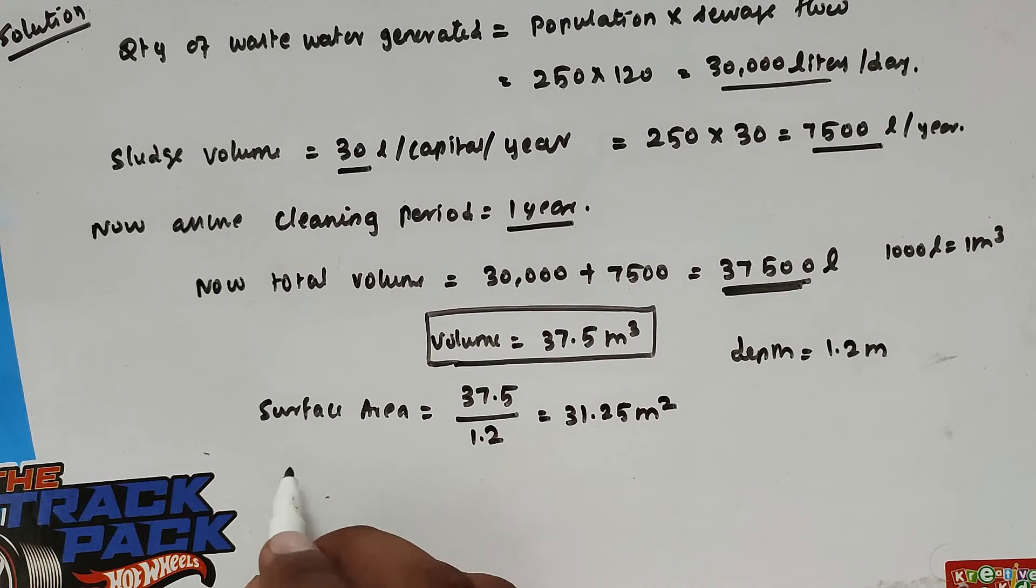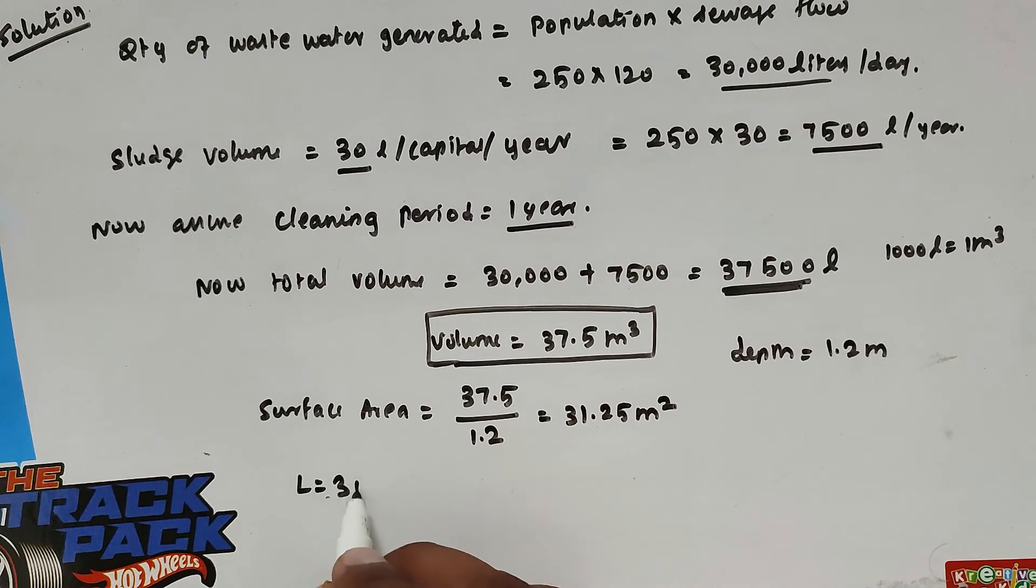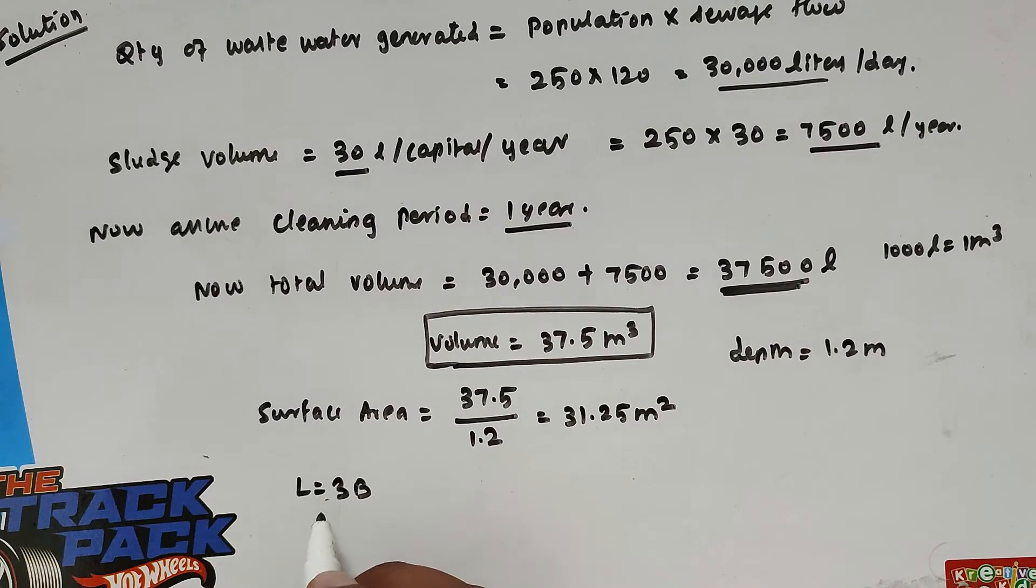Now we can take L equal to 3B. This is a rectangular tank. So we can substitute L into B equals 31.25. Now we can substitute L equals 3B. So 3B into B equals 31.25.